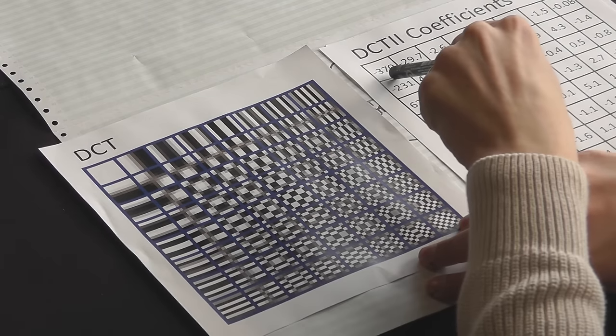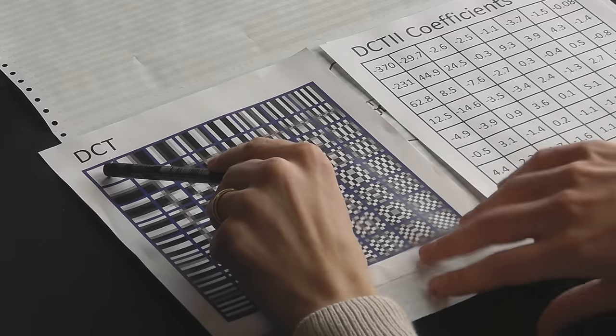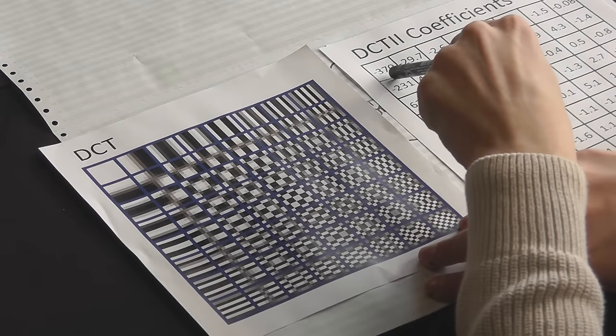So if we put this next to here, we can say that if we take this cosine and multiply it by minus 370, and add it to this one, multiply it by 29.7, and so on, and we do it for all of them, the added sum will be our original image back again.